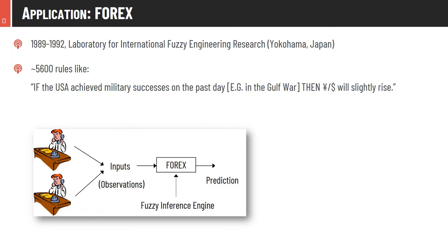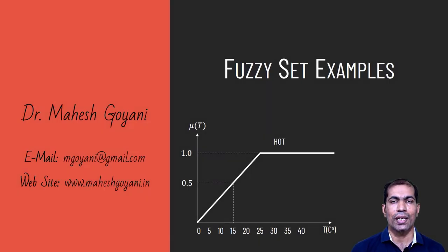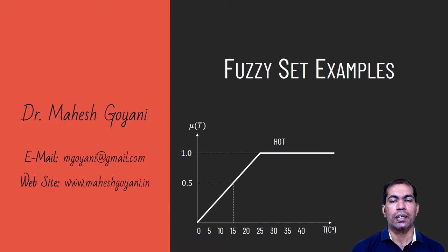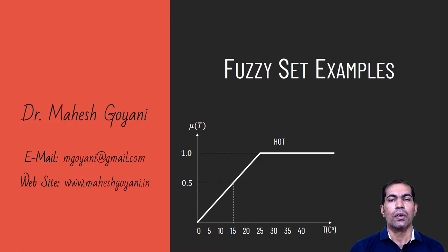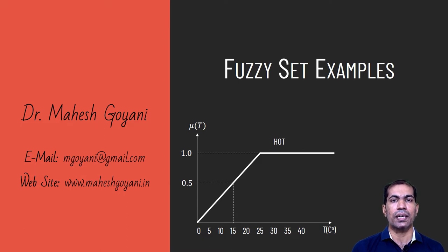Hello folks, welcome to CodeCrux. This is Mahesh Gugani. In today's video, I'm going to talk about fuzzy examples. Crisp sets have a very thin boundary — any element from the universe of discourse is either a member (membership value 1) or non-member (membership value 0). In fuzzy sets, membership value can be between 0 and 1, representing an infinite-valued logic depending on how far the element is from the boundary.